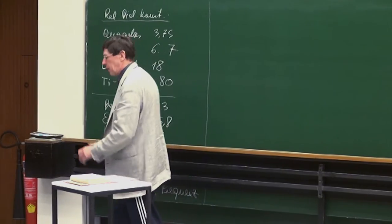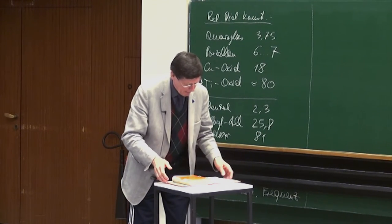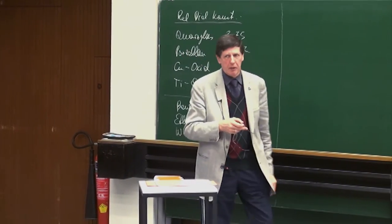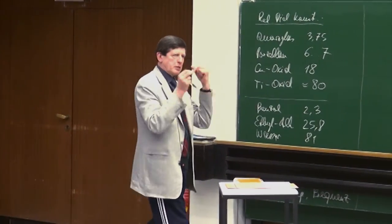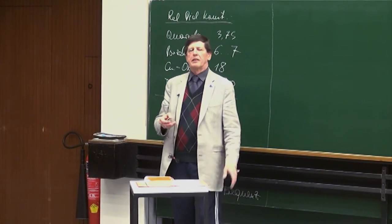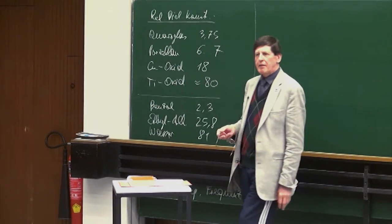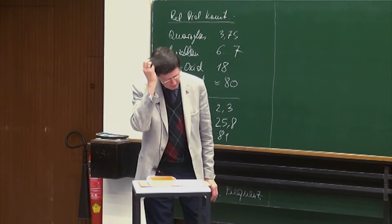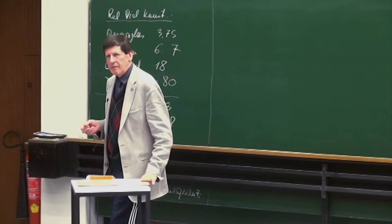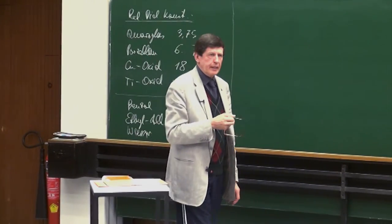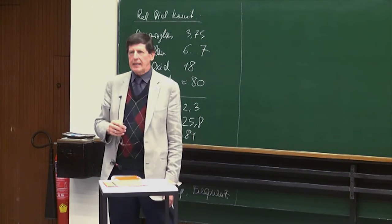Noch eine kurze Bemerkung: Wir haben gestern beim Plattenkondensator nicht primär das Feld gemessen, sondern die elektrische Spannung mit einem Voltmeter. Durch das Hineinschieben des Dielektrikums ging die Spannung zurück. Da U = E·d gilt und d gleich geblieben ist: wenn E um den Faktor 1/εᵣ zurückgeht, dann geht auch U zurück.